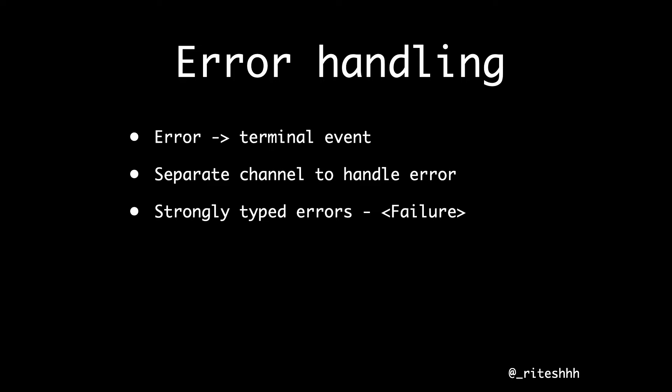Combine had this extra feature of strongly typed errors. In Combine, every API always has two parameters — one for value, one for error — and that error parameter lets you manage error handling in a type-safe way. That's not the case with async/await — async/await has a catch block, and that type-erases your errors. We'll look at examples where you can work around that.